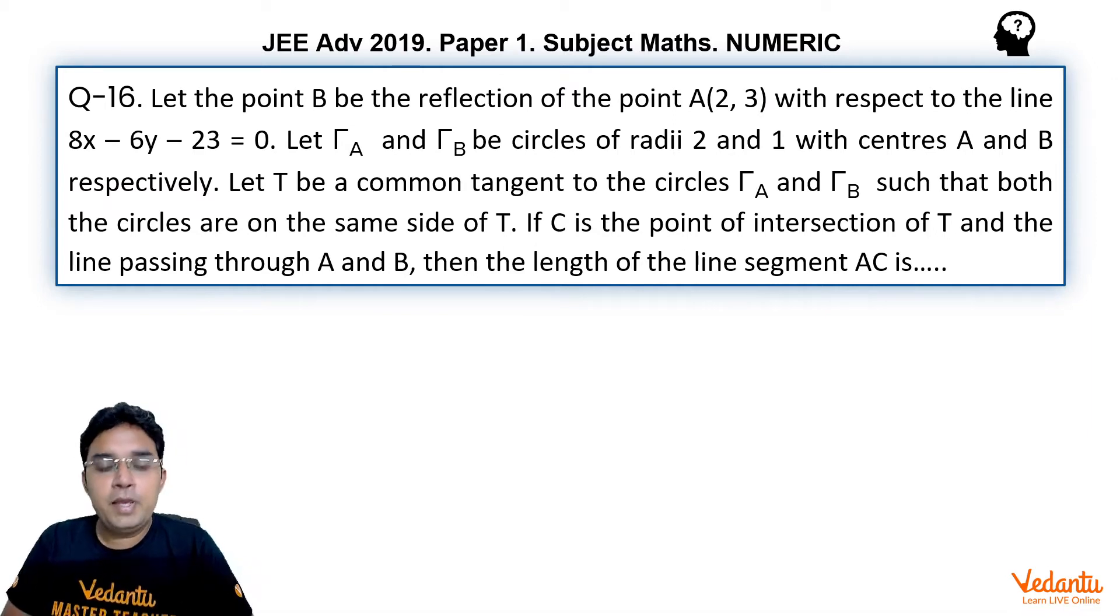Let the point B be the reflection of point A with respect to the line 8x minus 6y minus 23 equal to 0.